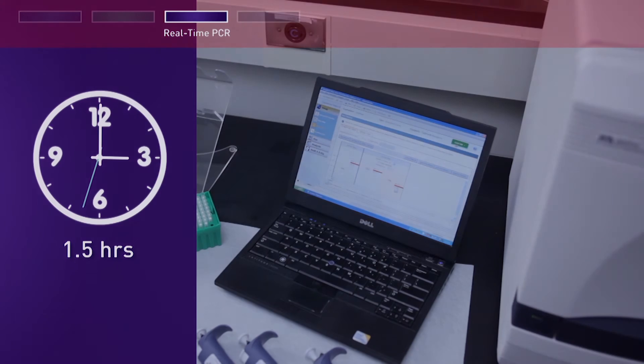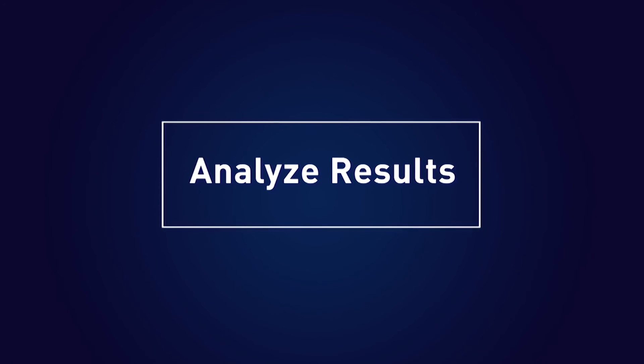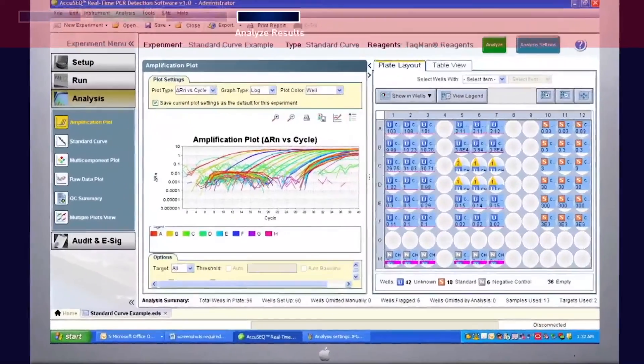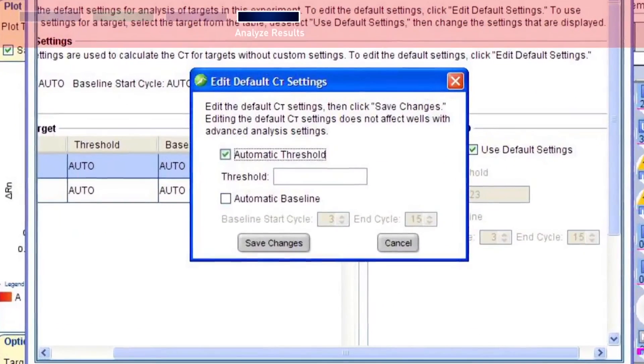The final step in this protocol is analyze results. In the AccuSeek software, select the following analysis settings. In the analysis settings window, deselect Automatic Threshold. In the threshold field, enter 0.2. Baseline may be run in automatic or manual mode, whichever mode best suits your data. Evaluate first with auto baseline by selecting Automatic Baseline.